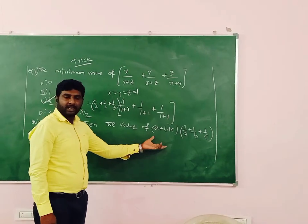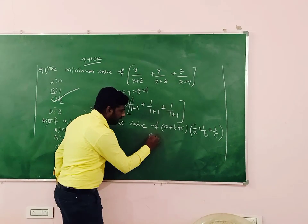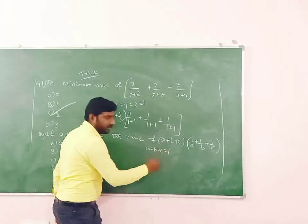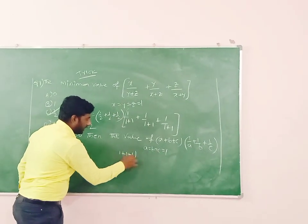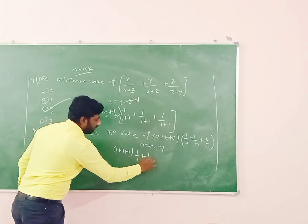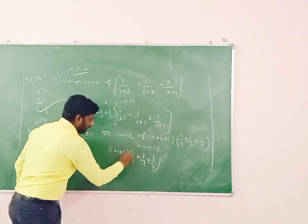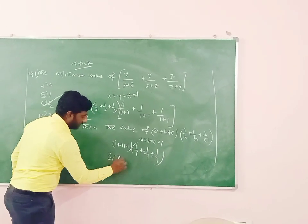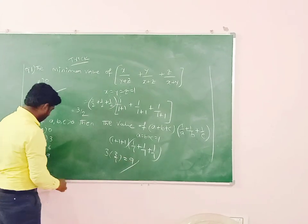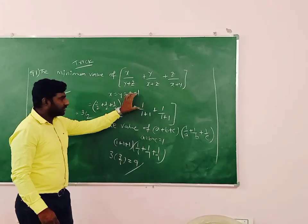Same method, here also we substitute a equal to b equal to z equal to 1. That means 1 plus 1 plus 1 into 1 by 1 plus 1 by 1 plus 1 by 1. That means 3 into 3 by 1, that means 3 into 3 is 9. Option 3 is correct.